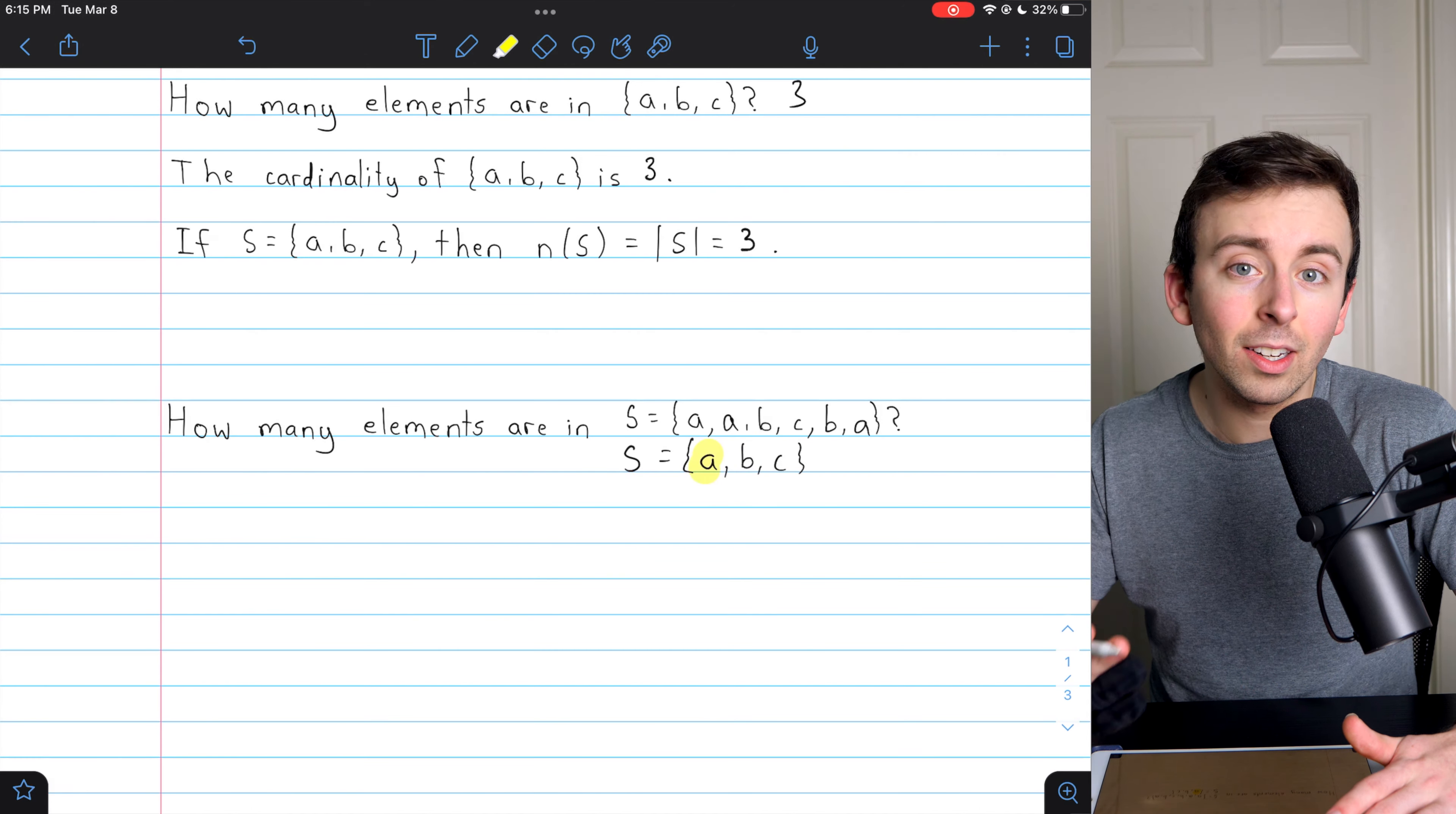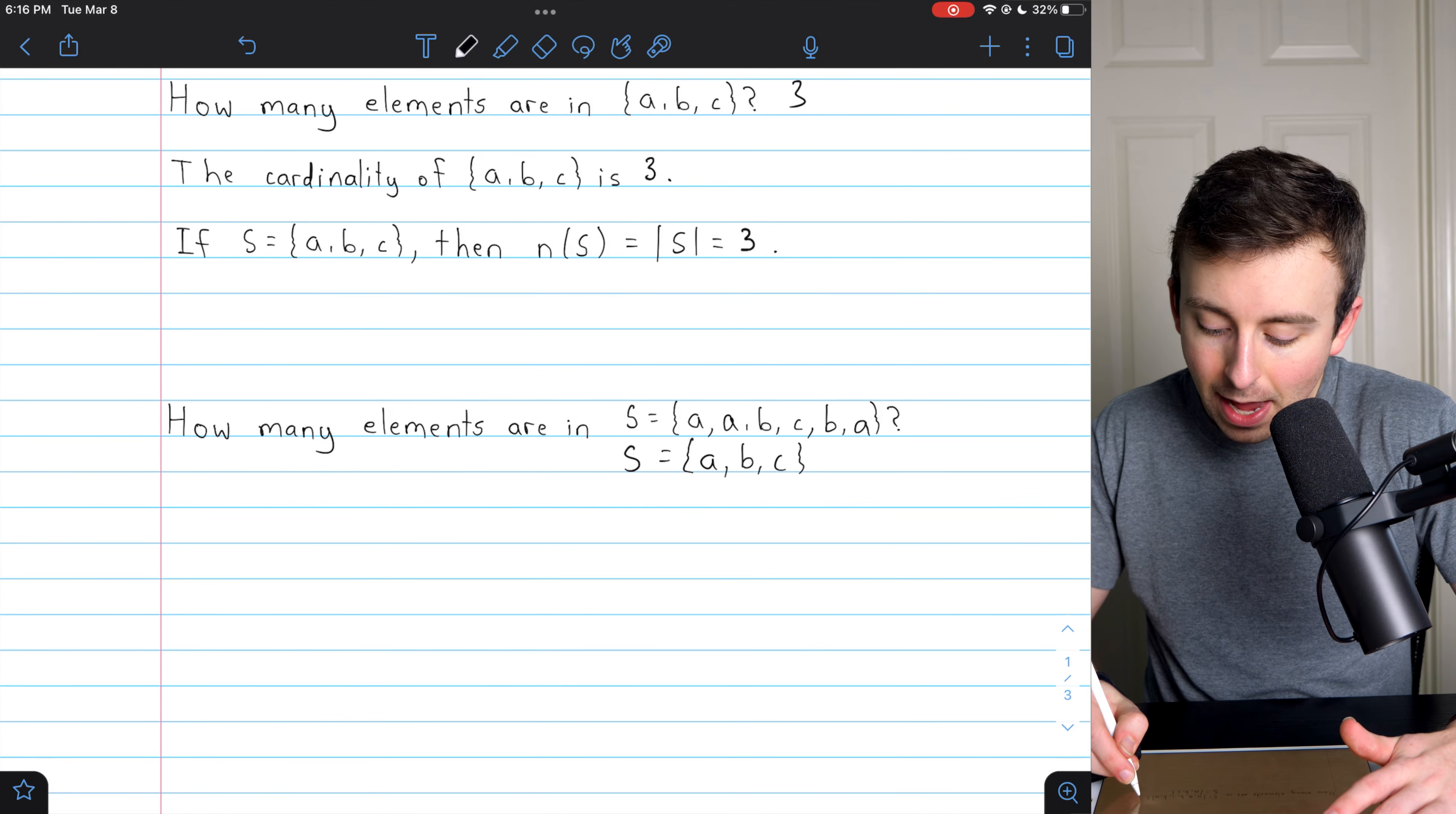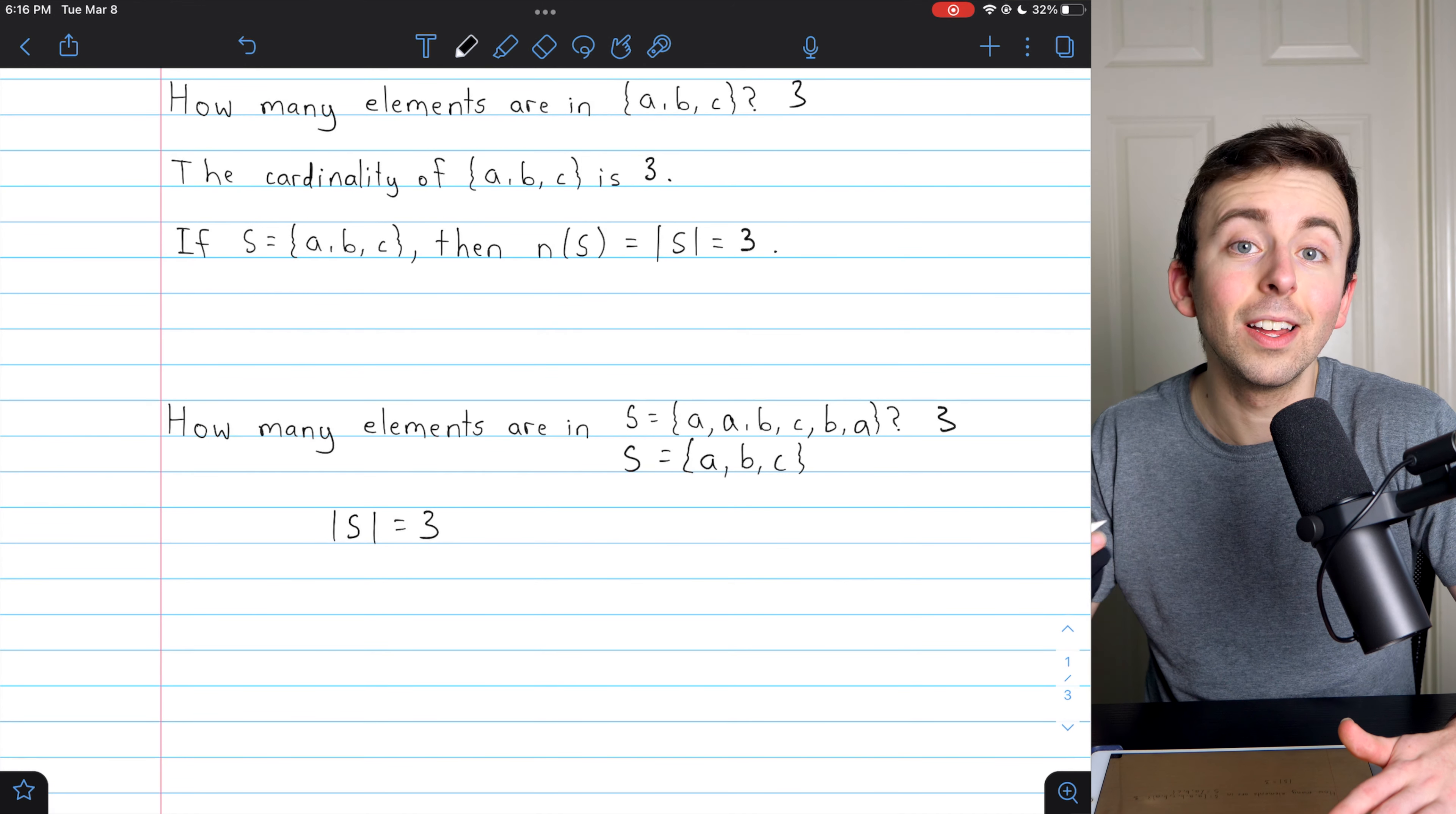Sets do not distinguish between an element appearing once or multiple times. That's just not a thing that happens in a set. Either an element is in a set or it's not in a set. So how many elements are in S? The answer, again, is just three. This set is the same as this one. They both just contain A, B, and C. That's three elements. So still, the cardinality of S is equal to three.